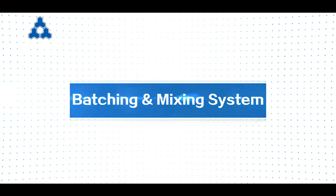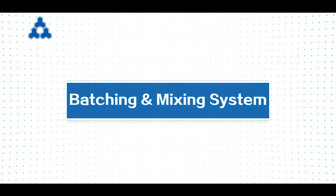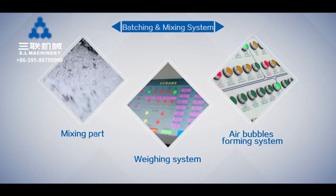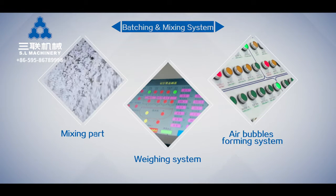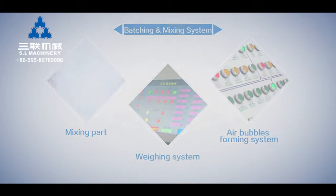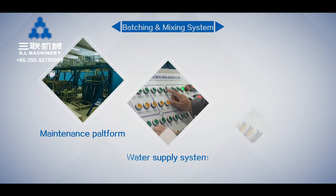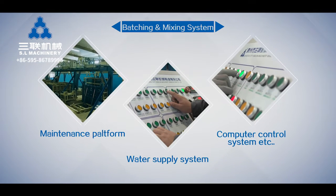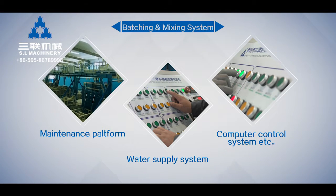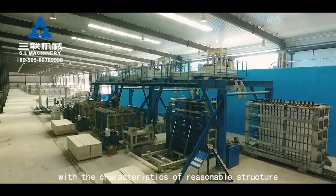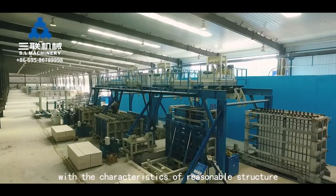The batching and mixing system is mainly composed of a mixing pot, foam system, air bubble forming system, maintenance platform, water supply system, and computer control system.